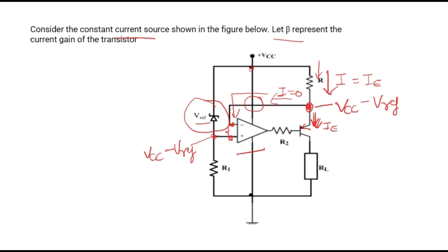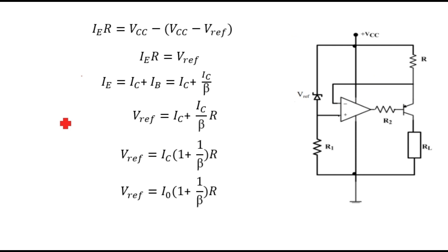We know the potential at this point, so I hope the question becomes easier now. At first sight these questions look complex, but if you know the concepts of Zener diode, op-amp, and BJT, they become easy. So let's draw the equation. As I already told you, the potential at this point will be VCC minus V-reference. The current across resistance R will be IE, so IE times R equals VCC minus (VCC minus V-reference).